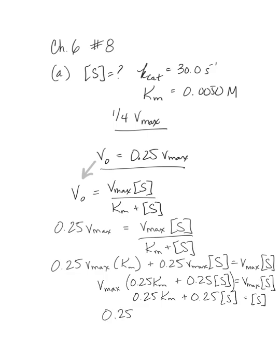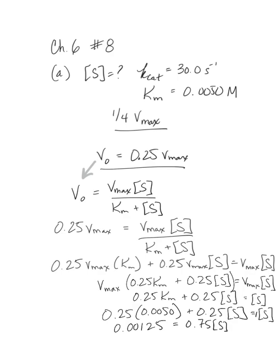We know a value for Km, and it's 0.0050 molar. So it becomes 0.25 times 0.0050 plus 0.25 S equals S. Plugging that into the calculator: 0.25 times 0.0050 is 0.00125, which equals 0.75 S — since I subtracted 0.25 from both sides in front of the substrate concentration. Dividing both sides by 0.75, I get a substrate concentration of 0.00167 molar.